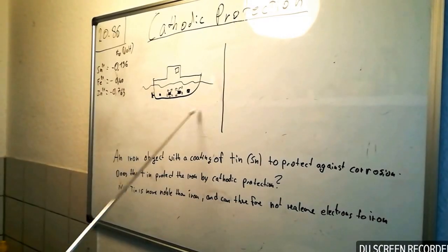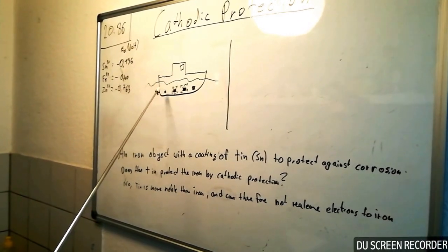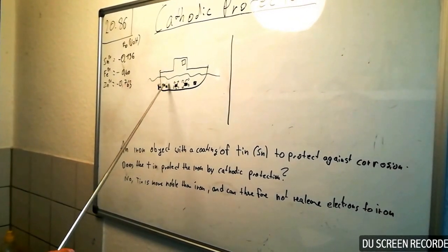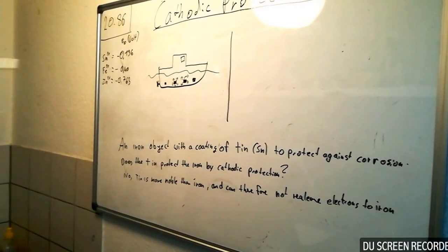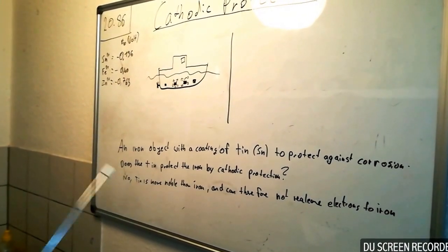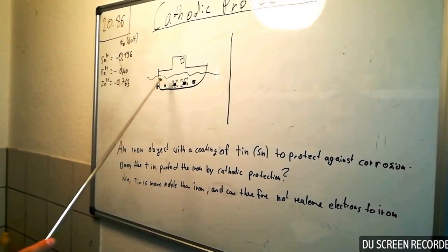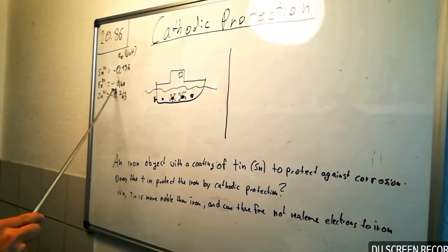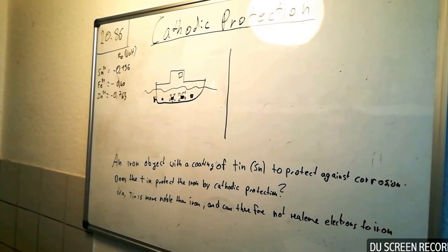Now we come to a little example with the boat. The boat got little sheets of tin on it, so the tin protects the iron by cathodic protection. Important is that the anode needs to get a lower potential than the cathode to protect it.